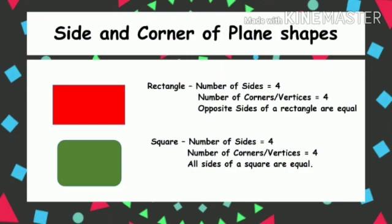Now coming to the square. Since we have studied rectangle, we know it has four sides. Just like a rectangle, a square also has four sides — but the difference is that all sides of a square are of the same length, whereas in a rectangle only opposite sides are equal. So there are four sides in a square and, just like the rectangle, there are also four corners in a square.